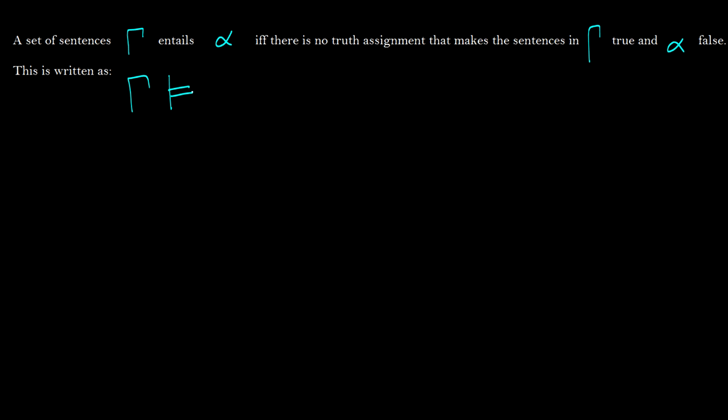A set of sentences gamma, this is the Greek symbol gamma, we use this for a collection of sentences, entails some sentence P, which I'm actually going to rewrite as alpha, a lowercase Greek letter. If there is no truth assignment that makes everything in gamma true and alpha false. So we can write this as gamma, then we have a double turnstile alpha. So this means that gamma entails alpha.